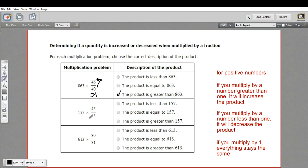In this next one, we have 157 times 45 over 45. Well, 45 over 45, that equals one. So the answer here is just going to be 157. So the product is equal to 157.